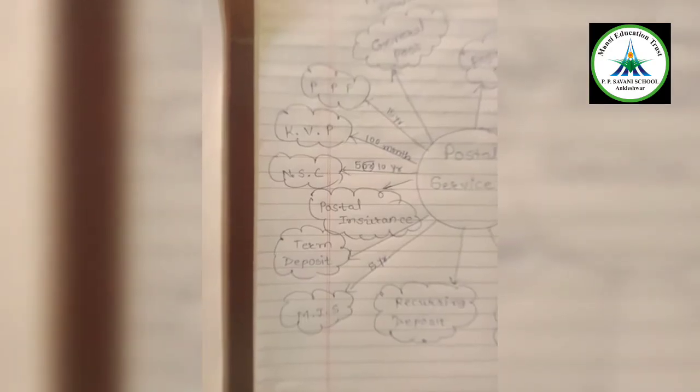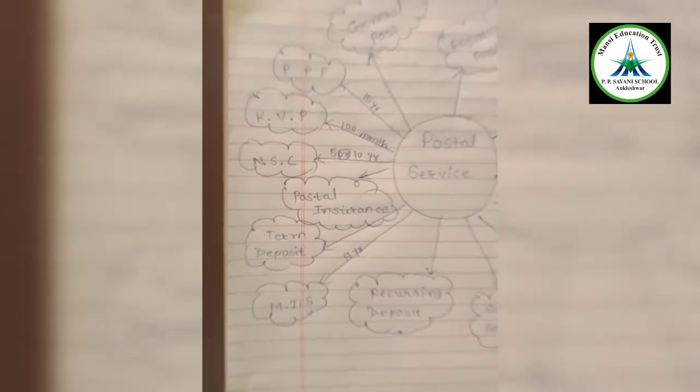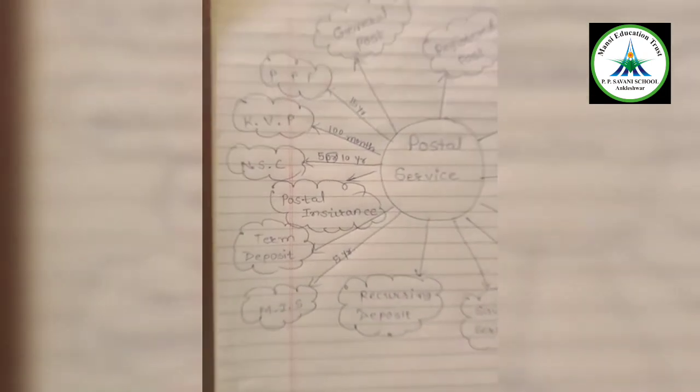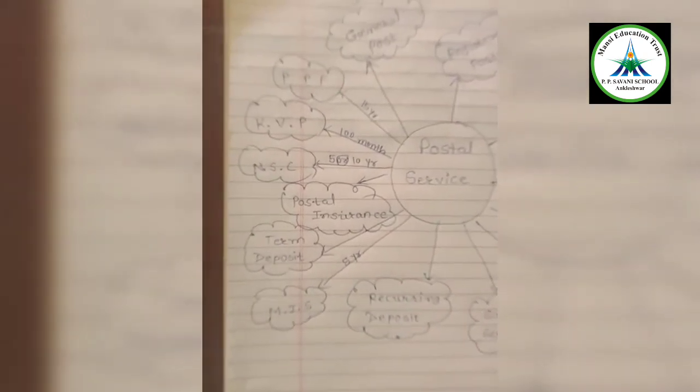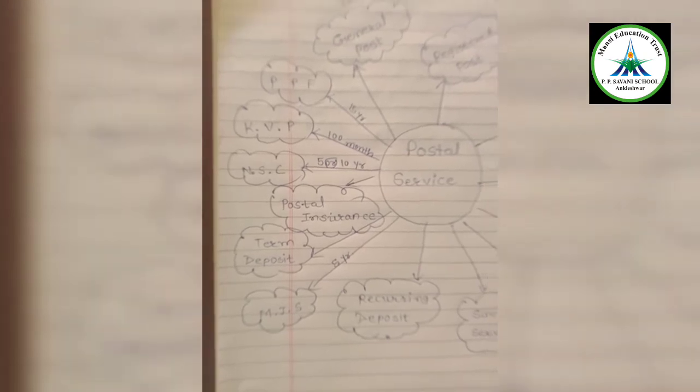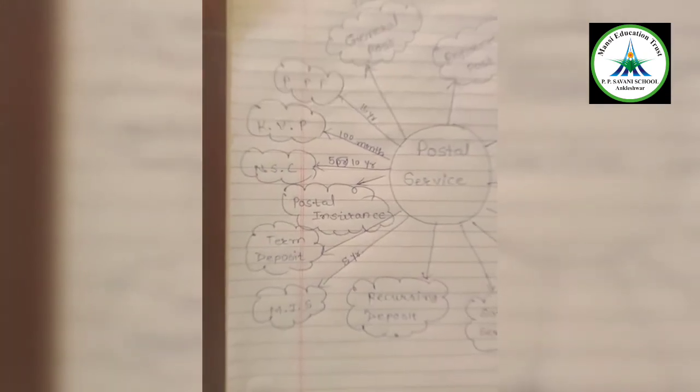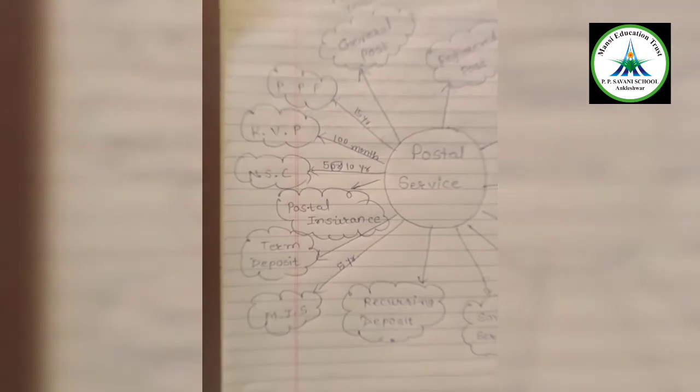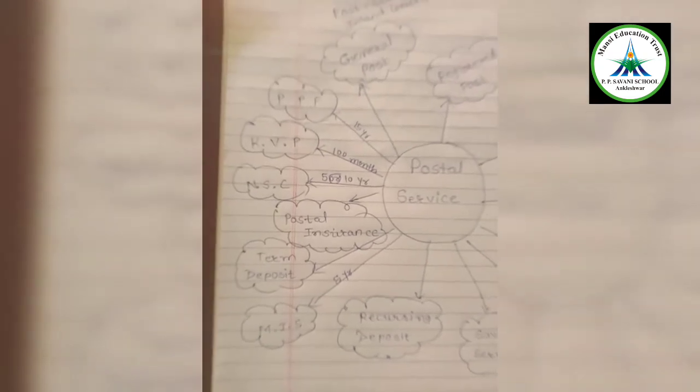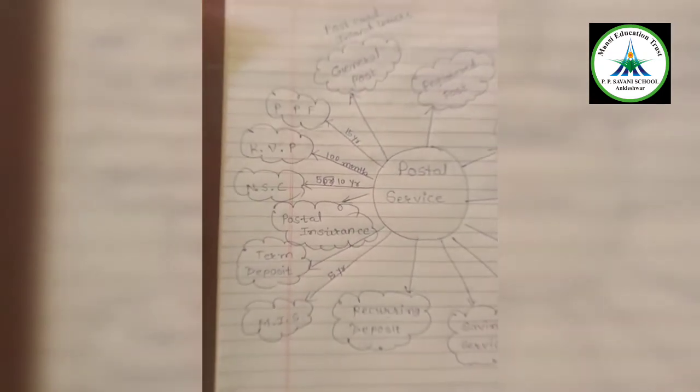Next is post office national savings certificate. The duration of this savings certificate is for five to ten years and the interest rate is decided prior only before investing. At the end of five to ten years the amount can be claimed after fulfilling the formalities of post office.